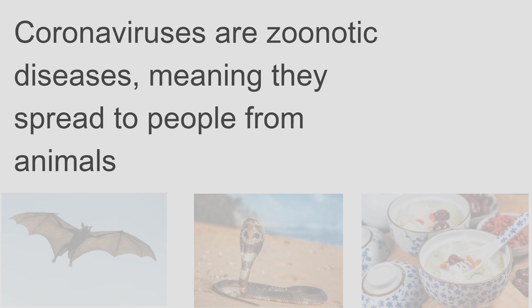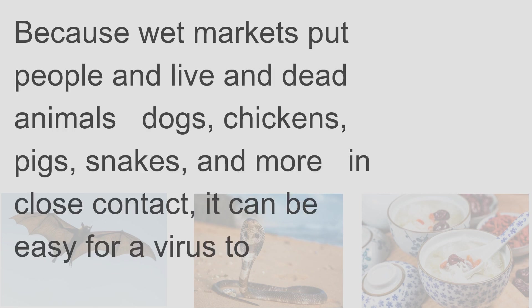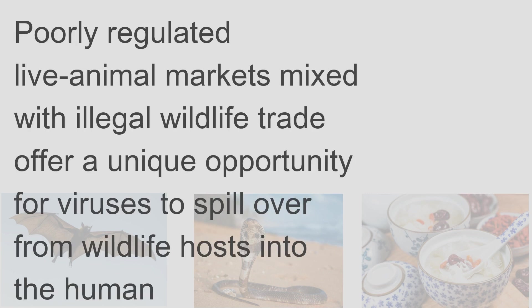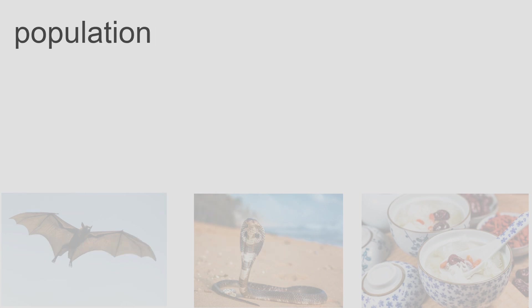In wet markets, coronaviruses are zoonotic diseases, meaning they spread to people from animals. Because wet markets put people and live and dead animals — dogs, chickens, pigs, snakes, and more — in close contact, it can be easy for a virus to make an interspecies jump. Poorly regulated live animal markets mixed with illegal wildlife trade offer a unique opportunity for viruses to spill over from wildlife hosts into the human population.